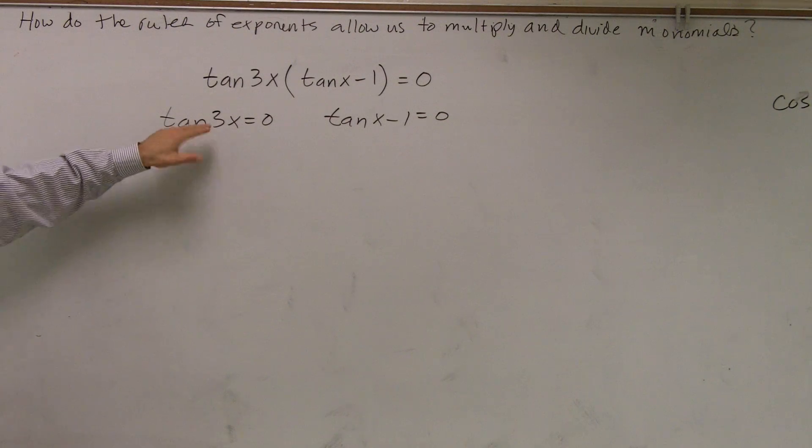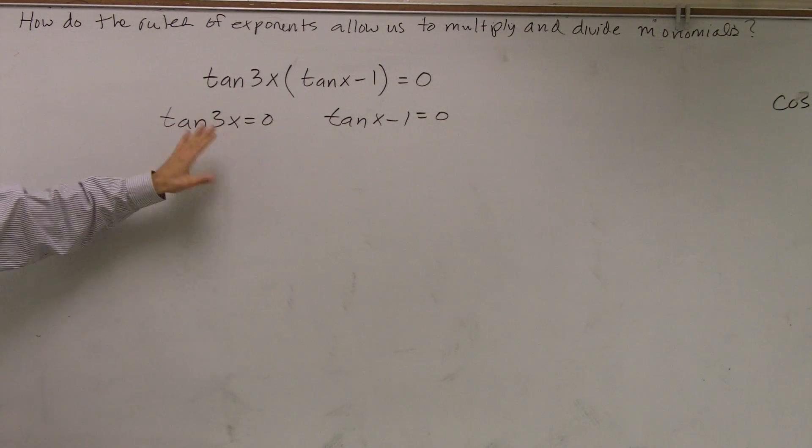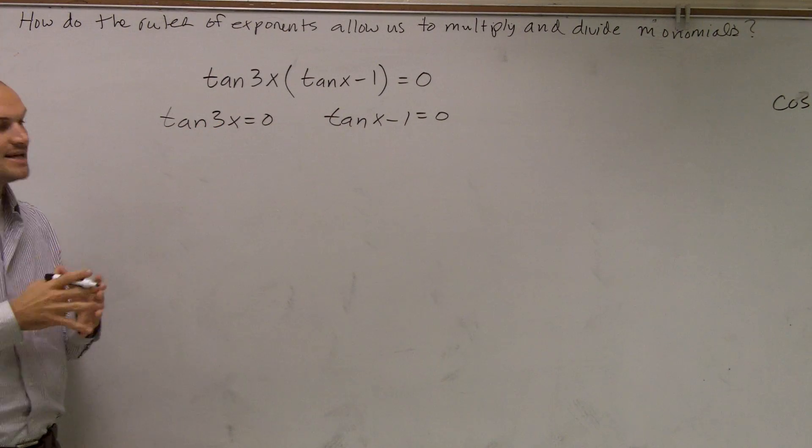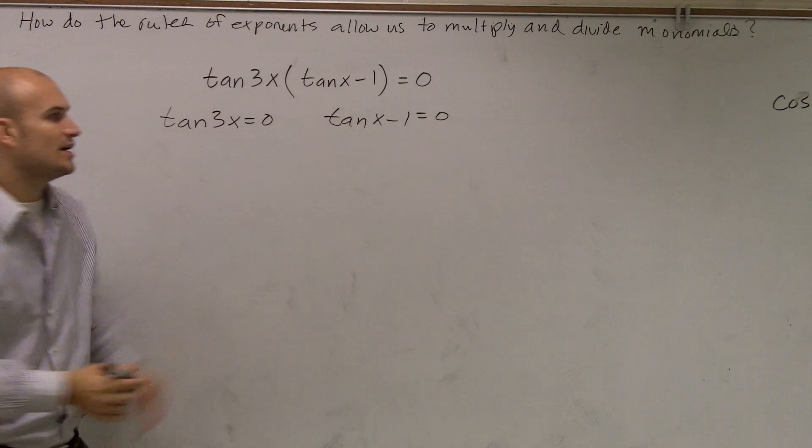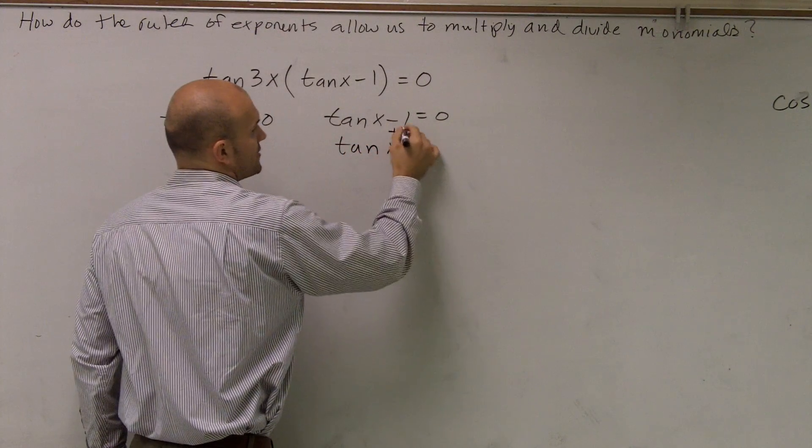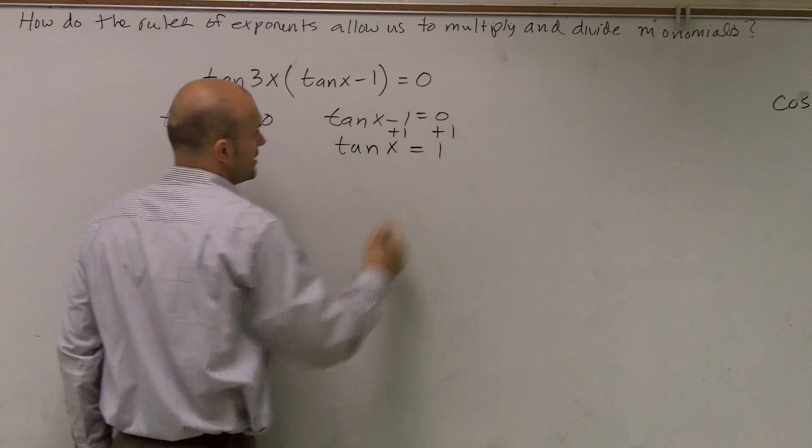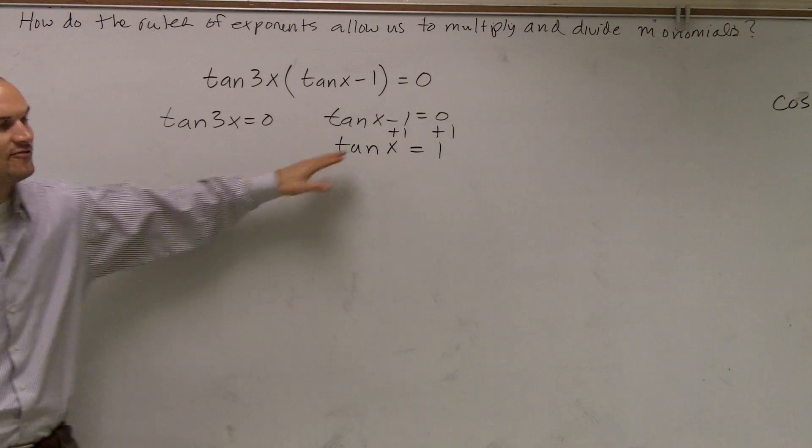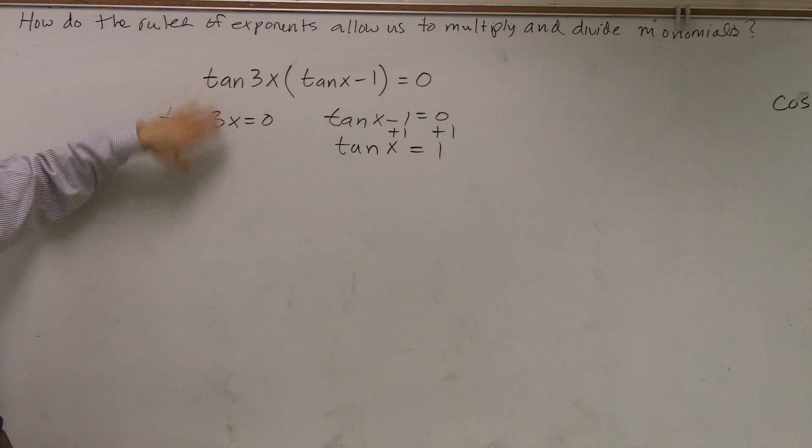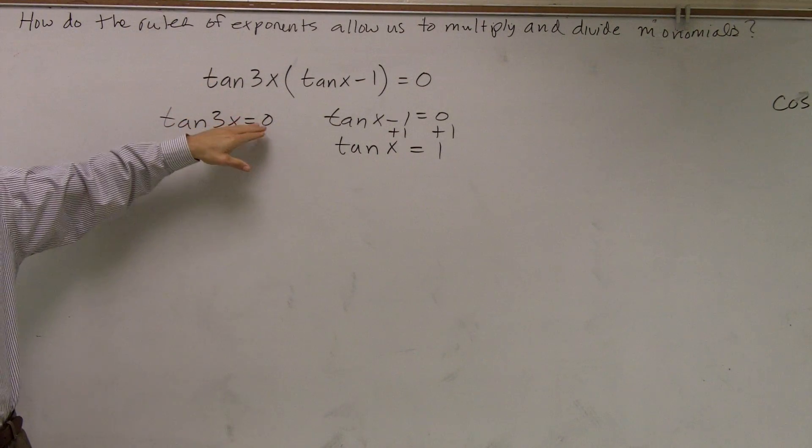So now remember, I told you not to worry about this until we actually solve for our value of x. So the next thing is now I need to find our value of x. So I'll add 1 to both sides and get tan(x) equals 1. So what I need to do is figure out when does tan(x) equal 1, and let's not worry about the 3x yet, when does tan(x) equals 0?